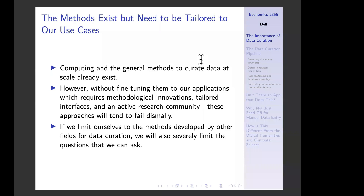The good news is that both the computing power and the methods needed to curate all those types of raw information already exist and have already transformed a variety of other domains. However, without fine-tuning these methods to our applications — which require some methodological innovations, tailored interfaces, and an active research community — if you just take these methods off the shelf, they'll tend to fail badly because they weren't pre-trained specifically on our types of applications. If we limit ourselves to methods developed by other fields, we'll severely limit the questions we as social scientists can ask.